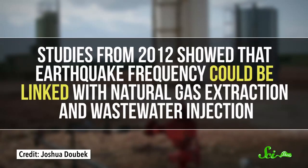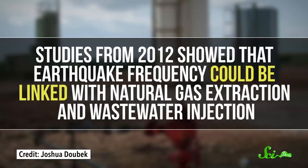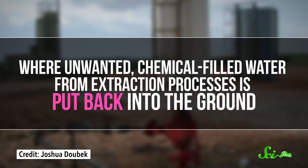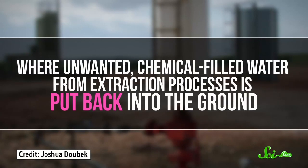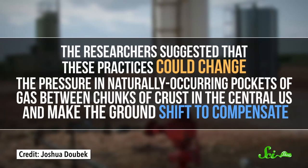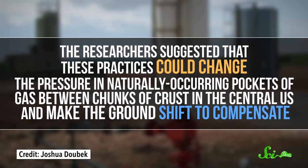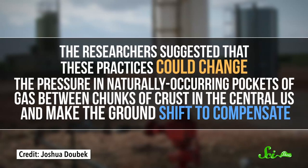Now, this is not a new idea. Scientists have been looking at this particular part of the U.S. and its increase in earthquakes since 2009. Studies from 2012 show that earthquake frequency could be linked with natural gas extraction and wastewater injection, where unwanted chemical-filled water from extraction processes is put back into the ground. The researchers suggested that these practices could change the pressure in naturally-occurring pockets of gas between chunks of crust in the central U.S., and make the ground shift to compensate.